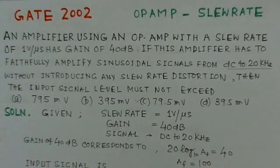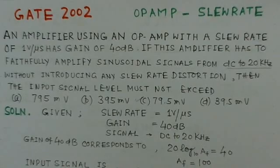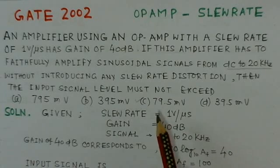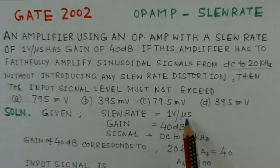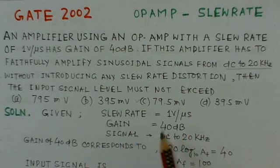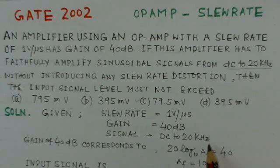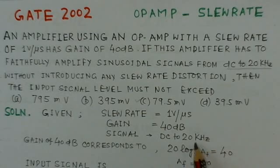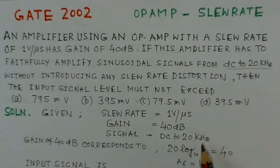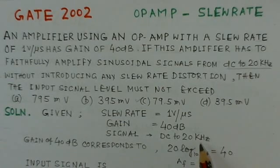In this problem, we identify what has been given: the slew rate is 1 volt per microsecond, the gain of the amplifier is given as 40 dB, and the signal frequency range is given as DC to 20 kHz. The signal is sinusoidal in nature. We have to find the maximum input signal level that can be applied to this amplifier so that the output is not distorted due to the slew rate distortion factor.